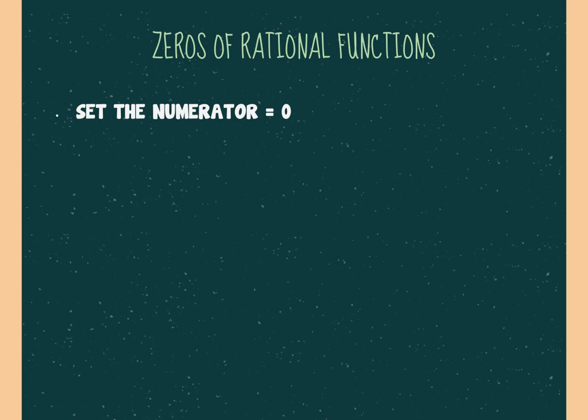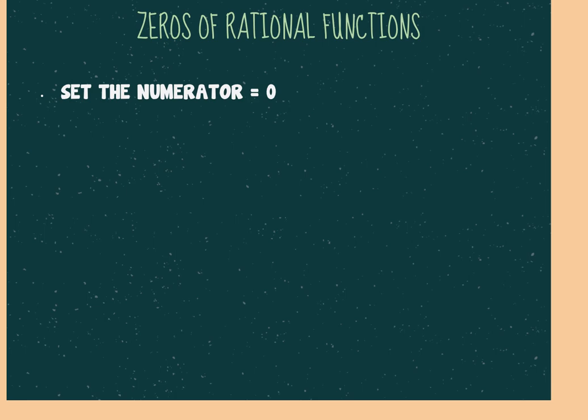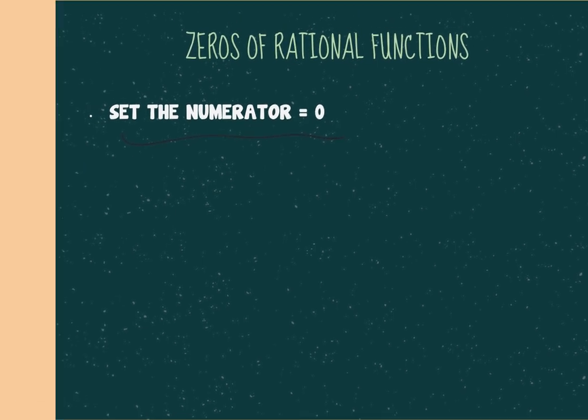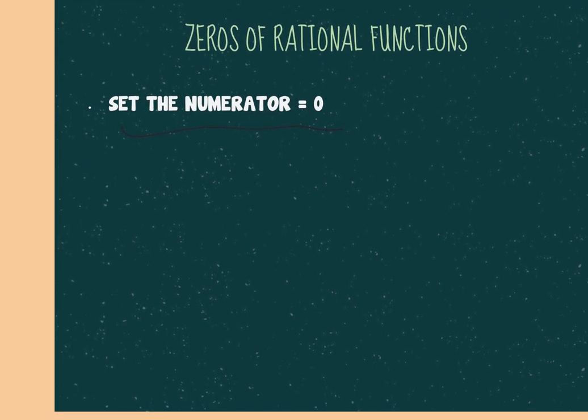The zeros of my rational function come from setting the numerator equal to zero. You ignore the bottom because if I set the whole thing equal to zero, I would multiply by the bottom and the bottom would cancel out. So I only worry about the numerator. You will list these zeros like x equals this number, this number, and this number.